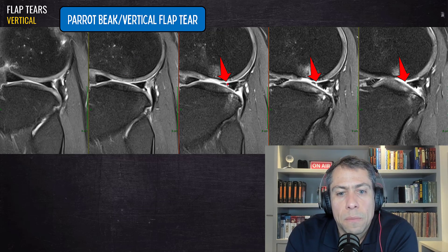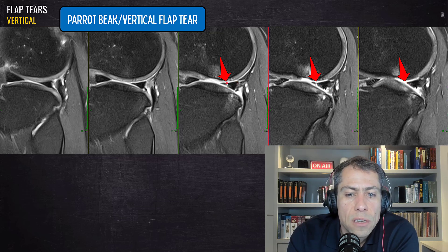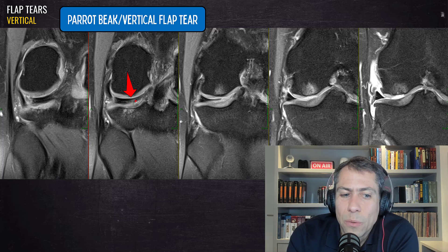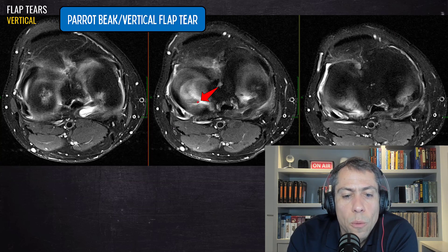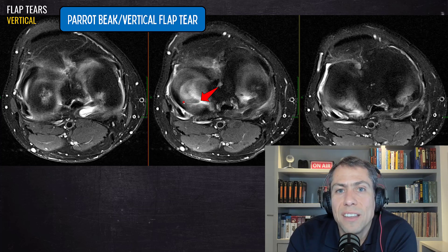In this second case, there is another parrot beak or vertical flap tear occurring at the posterior horn of the lateral meniscus. We can see the marching cleft sign here — this is the short axis of the lesion. On the long axis in the coronal plane, the meniscus is just blurred and irregular but we cannot identify the tear. On the axial plane we can clearly see the parrot beak or vertical flap tear. Always check the axial plane — it will help you make the distinction between these two types of meniscal tears.